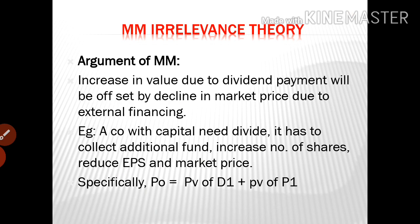If all these assumptions are kept, M.M. theory will be in effect. The argument of M.M. theory is that any increase in value due to dividend payment will be offset by a declining market price due to external financing. For example, if a company makes a dividend payment, shares become attractive and share value may increase; however, if the company needs external funds, it issues new shares, causing earnings dilution, and the share price falls, so the net effect is zero.